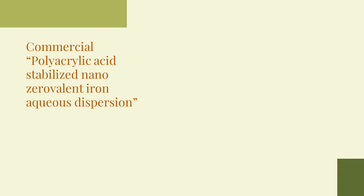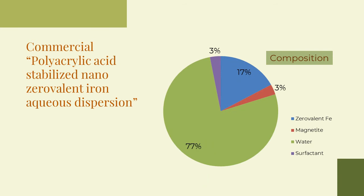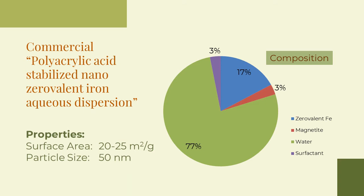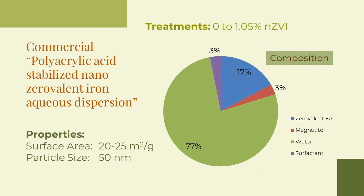According to the information provided by the supplier, the aqueous dispersion of nano-zero-valent iron consisted of 17% zero-valent iron, 3% magnetite, 77% water, and 3% surfactant. The average surface area of the nano-zero-valent iron was found to be 20 to 25 square meters per gram and the average particle size was 50 nanometers. Single metal-contaminated soil samples were amended using 0 to 1.05% of nano-zero-valent iron. Leaching using calcium chloride solution and a sequential extraction procedure was performed to evaluate the immobilization efficiency and fractionation of heavy metals before and after aging.